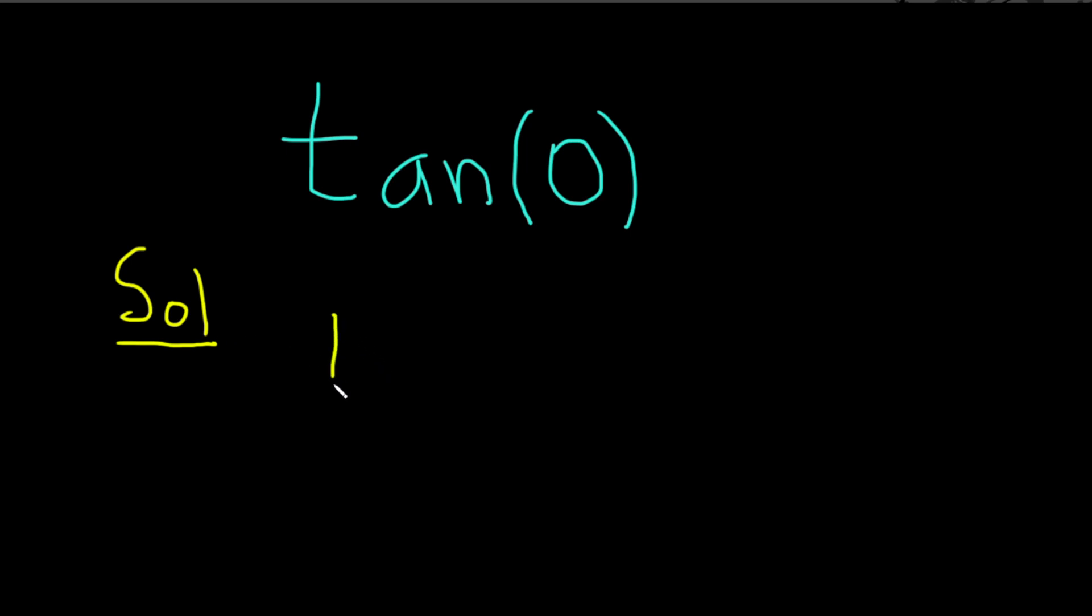So, the tangent of 0 is equal to, well, we know something about tangent. It's equal to sine over cosine. So, this will be the sine of 0 divided by the cosine of 0.